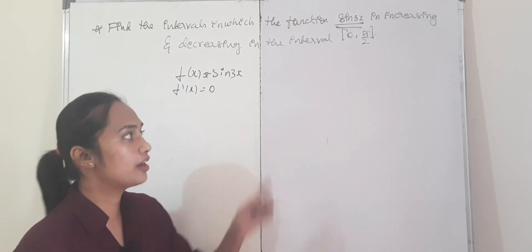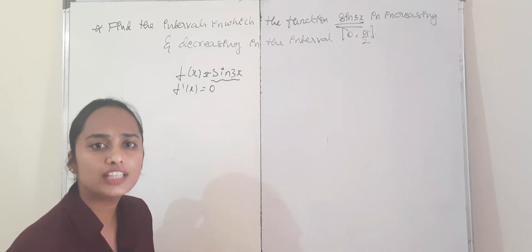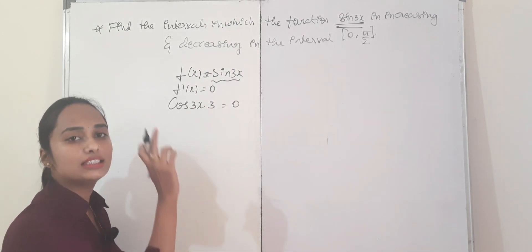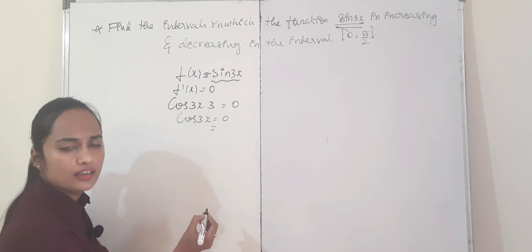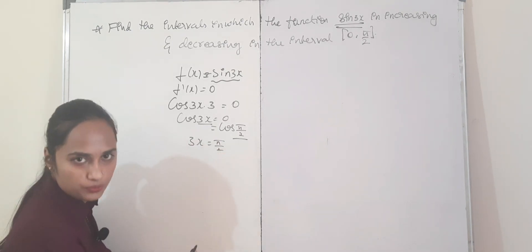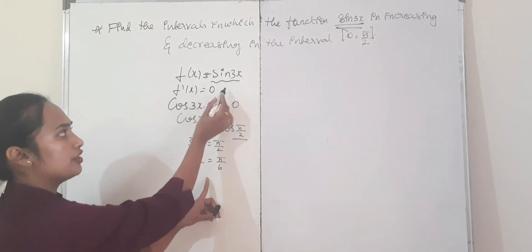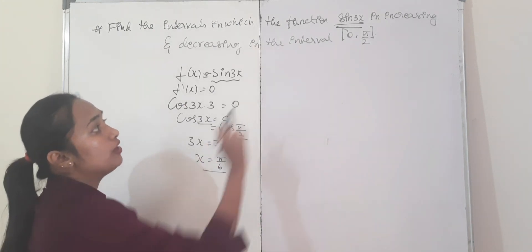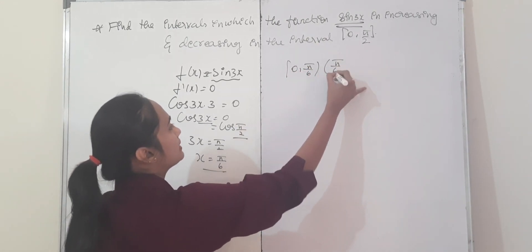Use the x-value from f′(x) = 0 to divide the given interval into two intervals. f′(x) = 3cos(3x). Setting cos(3x) = 0: cos is 0 at π/2, so 3x = π/2, giving x = π/6. In the interval [0, π/2], the only principal value is x = π/6. Using π/6, divide the interval into [0, π/6] and [π/6, π/2].